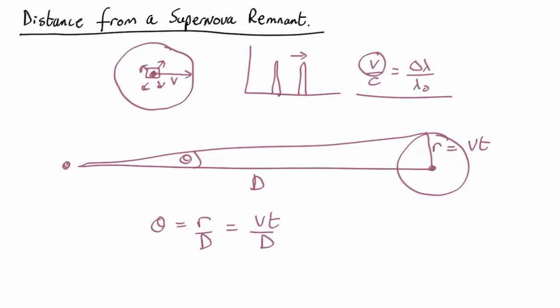So we can very easily rearrange and find out that the distance to the supernova is just the velocity, which we get from the Doppler effect, times the time since the explosion, divided by the angular radius.